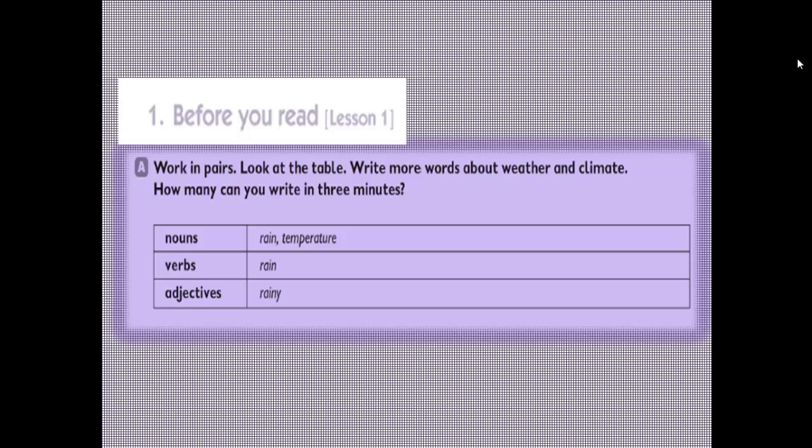And in the third part, adjectives, we can write rainy—so raining here is an adjective—hot, cold, warm, cool, snowy, foggy, misty, etc.